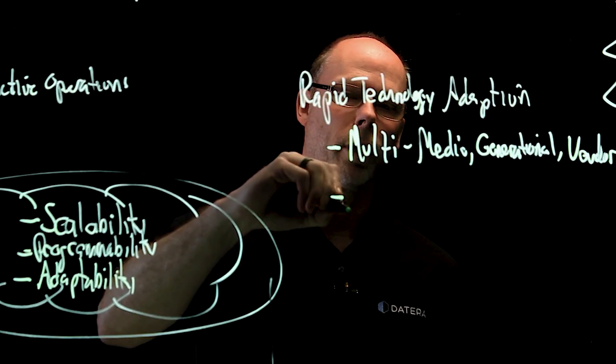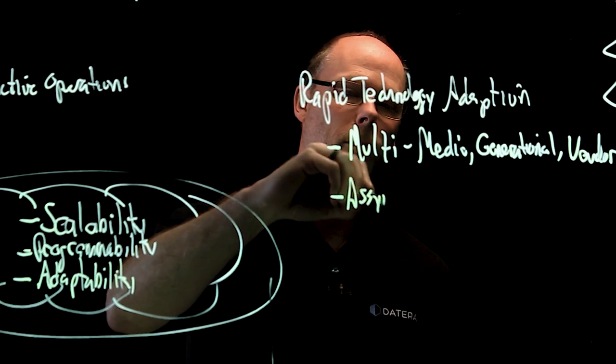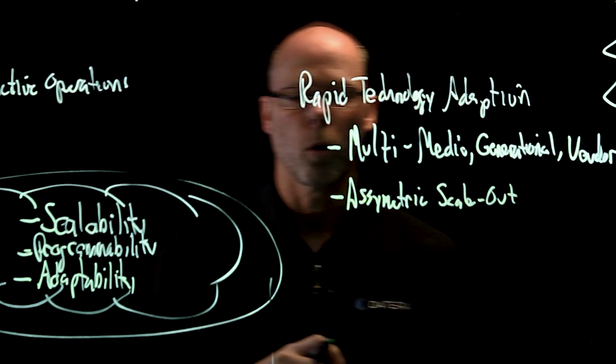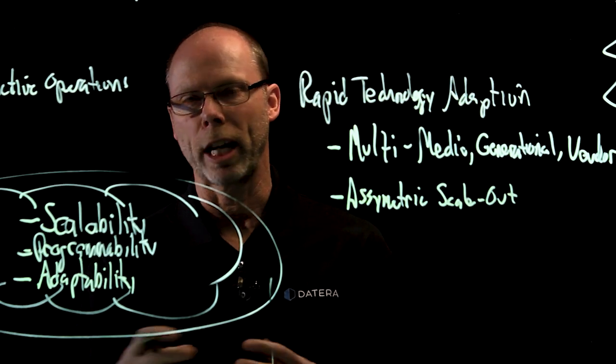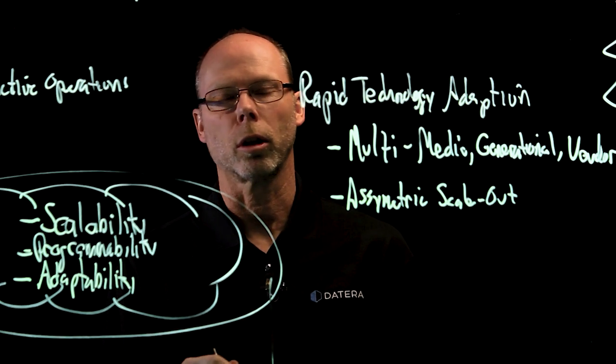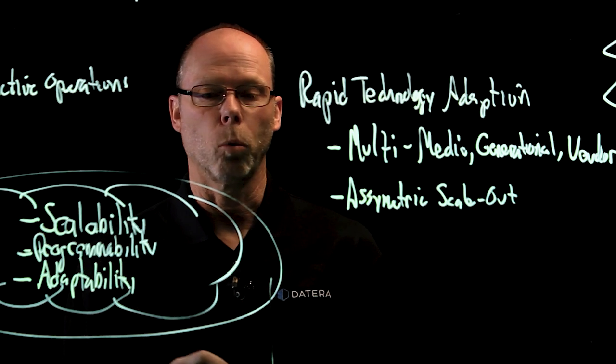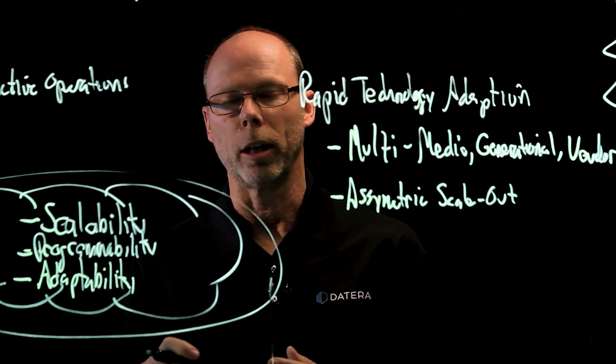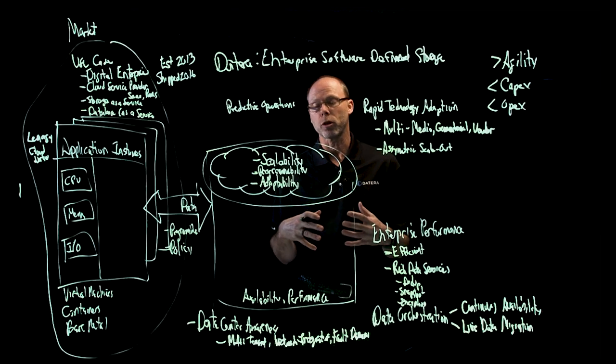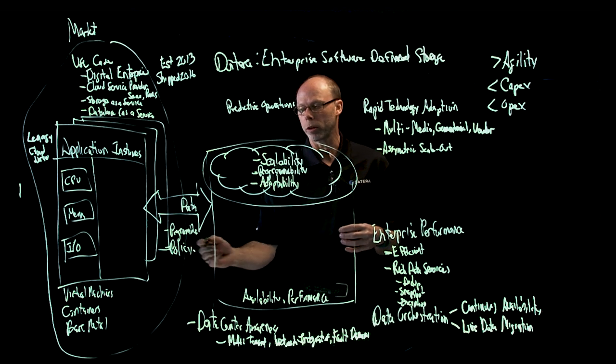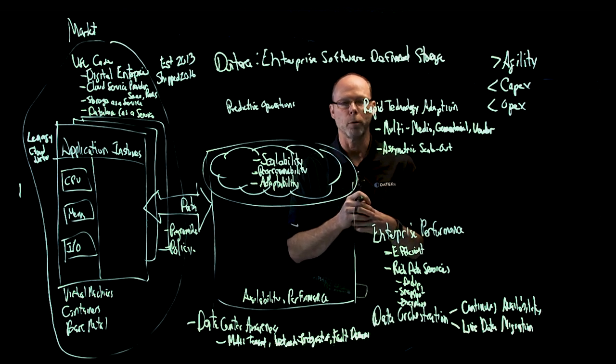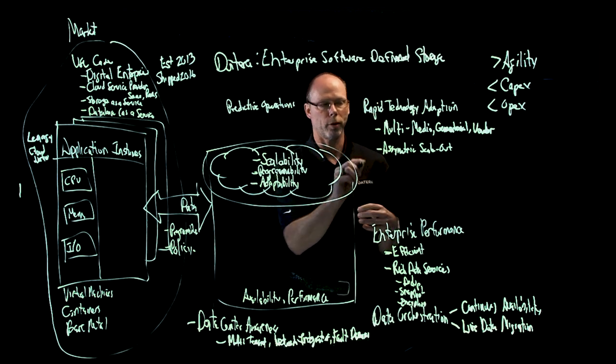Next under rapid technology adoption is what we call asymmetric scale-out. The reason this is important is we don't require the system to be constructed of the same set of resources. Most scale-out systems demand that the nodes in the cluster be balanced and be equal. And what we've done is created some intellectual property that lets us take an inventory of the resources, and we encourage a diverse set of resources, and then map those onto the policy specified in the service level objectives per application instance. And so I'll go through an example here in a few minutes that really talks about the benefit of this asymmetric scale-out.